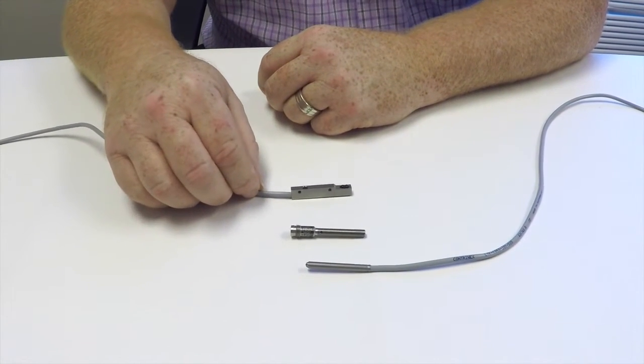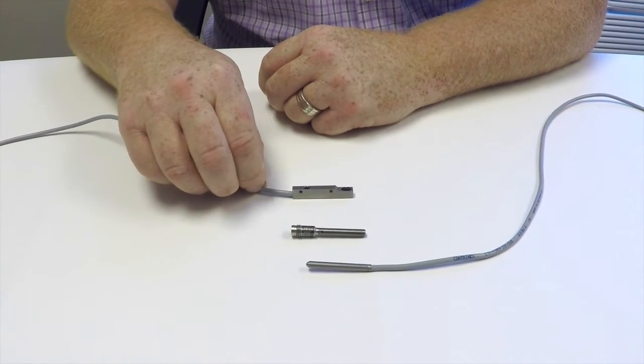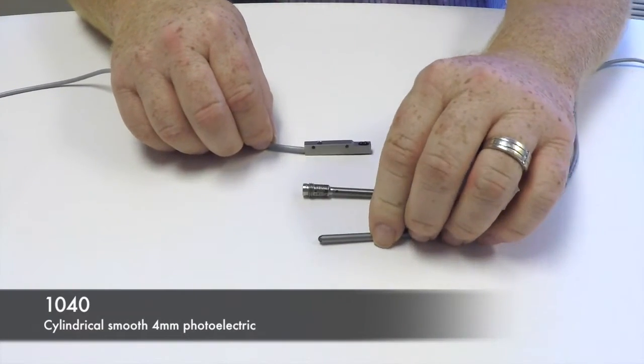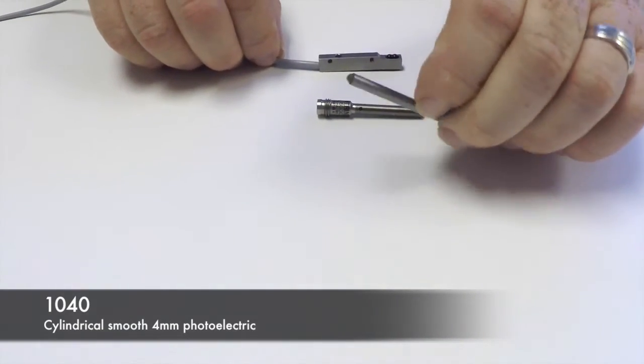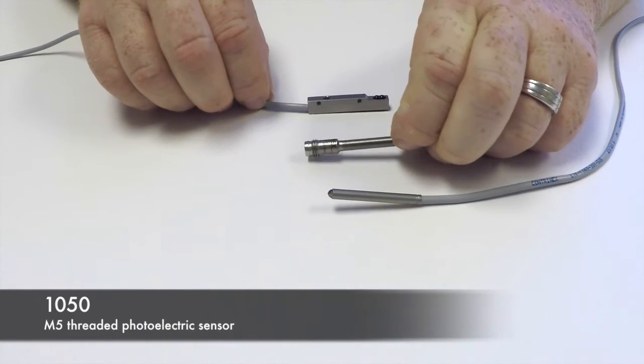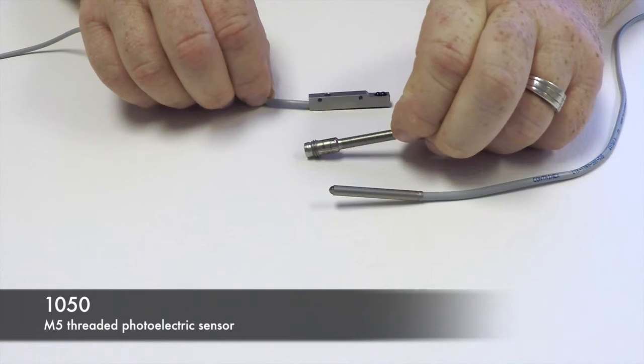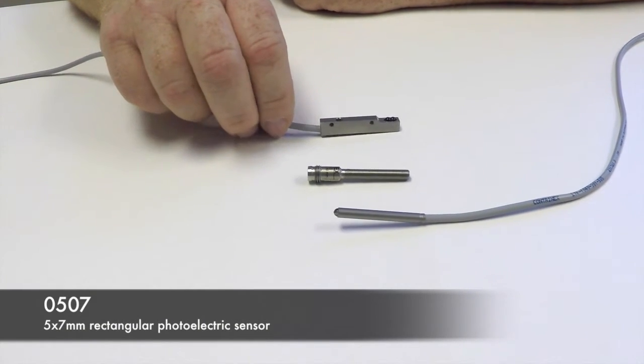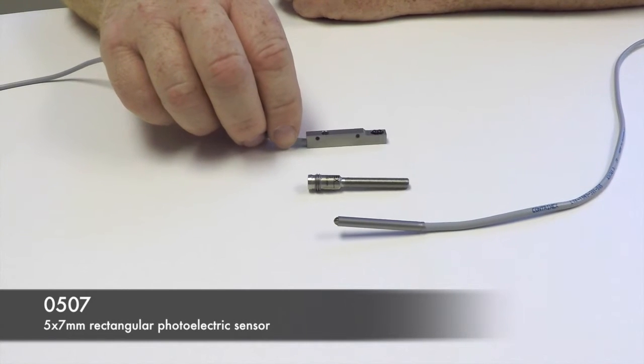I'd like to present to you three products in our cylindrical light emission family. This is the 1040, it's a smooth barreled 4mm photoelectric sensor. This is the 1050, it's an M5 threaded photoelectric sensor. And this is the 0507, it's a rectangular 5mm x 7mm sensor.